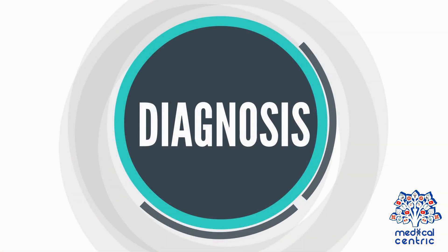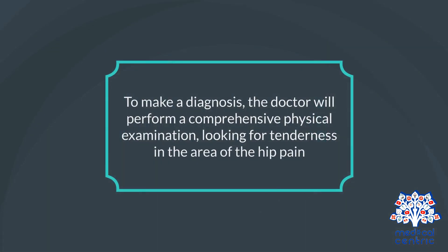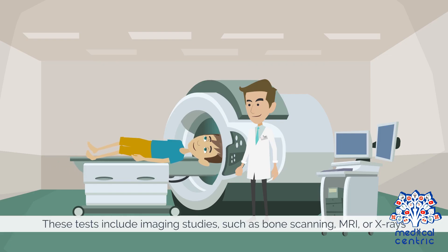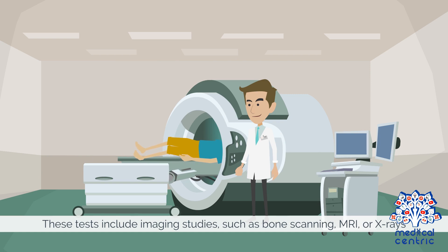Diagnosis and treatment. To make a diagnosis, the doctor will perform a comprehensive physical examination, looking for tenderness in the area of the hip pain. To rule out other possible injuries or conditions, such as arthritis, the doctor will perform additional tests. These tests include imaging studies, such as bone scanning, MRI, or x-rays.